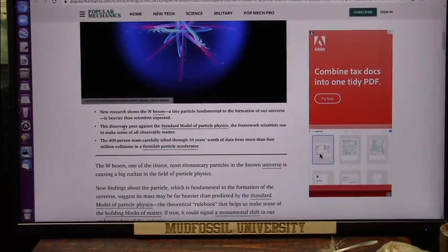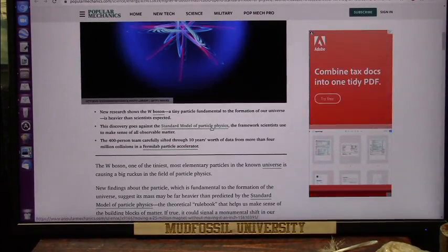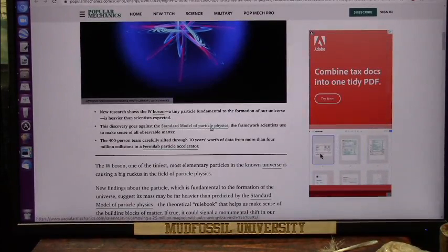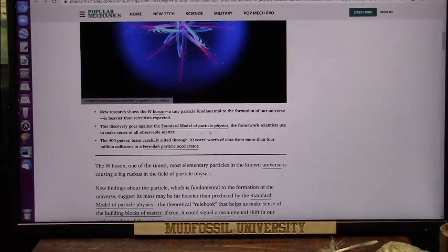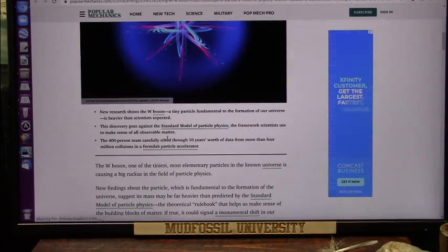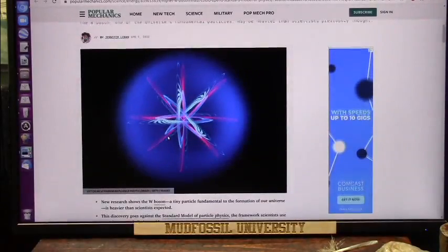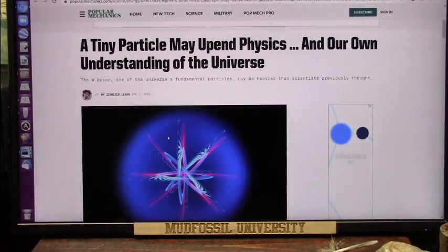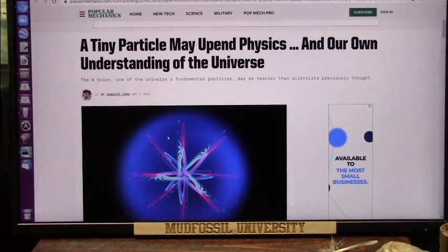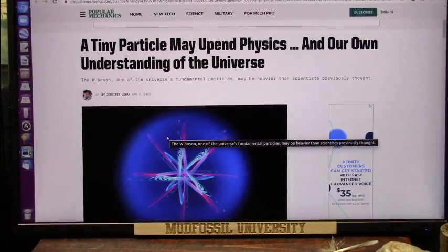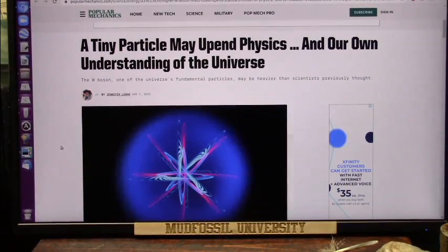Now this discovery goes against the standard model, which I've been against forever, which is the framework that scientists use to make sense of all the things they see. So that's why nothing makes sense - because what they're looking at, they have to try to fit it into what they were told is the Bohr model, and the Bohr model doesn't work. Only electron flood theory works, and I show this in extreme detail.